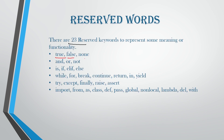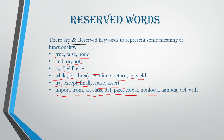The reserved keywords are: True, False, None; and, or, not; if, elif, else; while, for, break, continue, return, in, yield; try, except, finally, raise, assert; import, from, as, class, def, pass, global, nonlocal, lambda, del, with. These are 33 reserved keywords which cannot be used as identifiers in your programs.